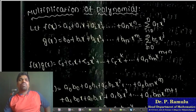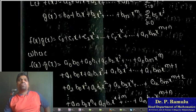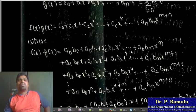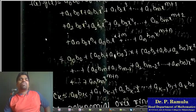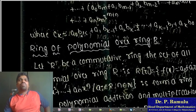Multiplication of two polynomials: taking f(x) = sum a_i x^i and g(x) = sum b_i x^i, if we multiply we get c_0 + c_1 x + c_2 x^2 + ... + a_n b_n x^{2n}, where c_k = a_0 b_k + a_1 b_{k-1} + a_2 b_{k-2} + ... + a_{k-1} b_1 + a_k b_0.